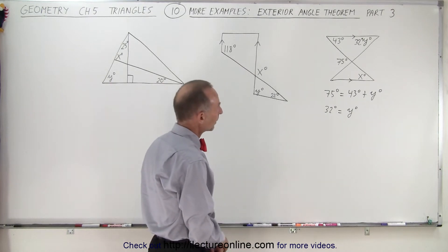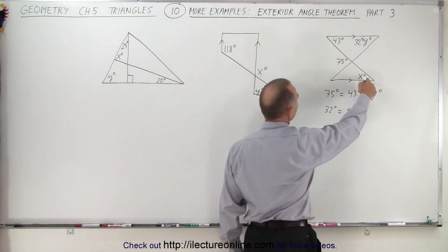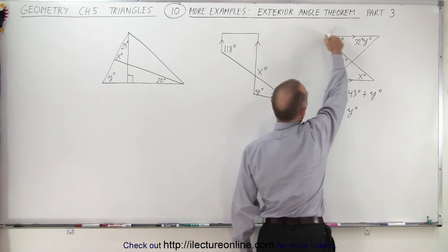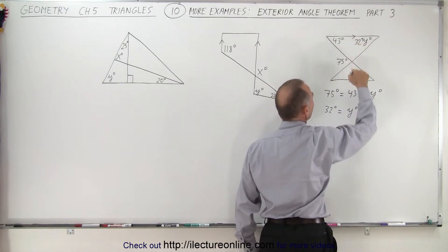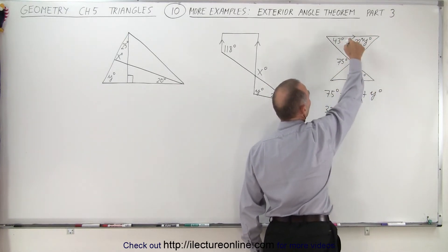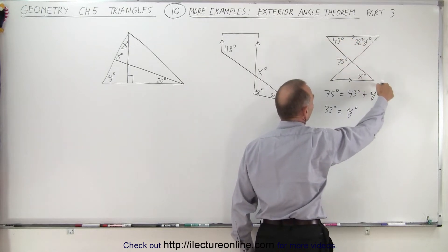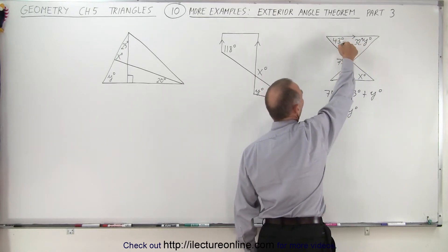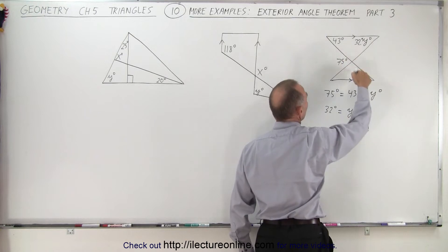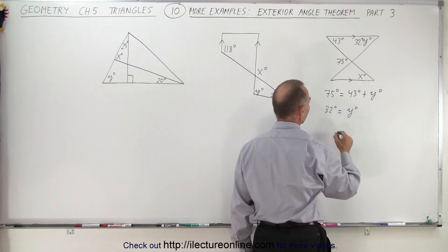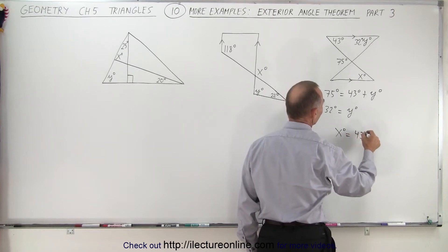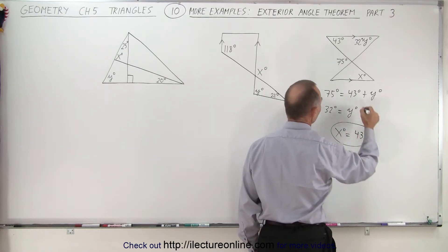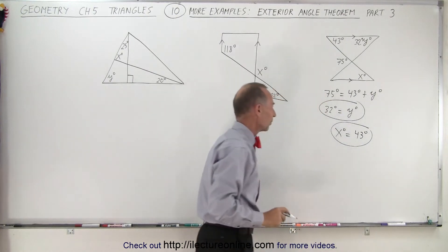What about x? We can see that this line is parallel to this line, as indicated, with the transversal crossing them. So we can see that our alternate interior angles must be equal, and therefore x degrees is equal to 43 degrees. Those are the two answers for our first problem.